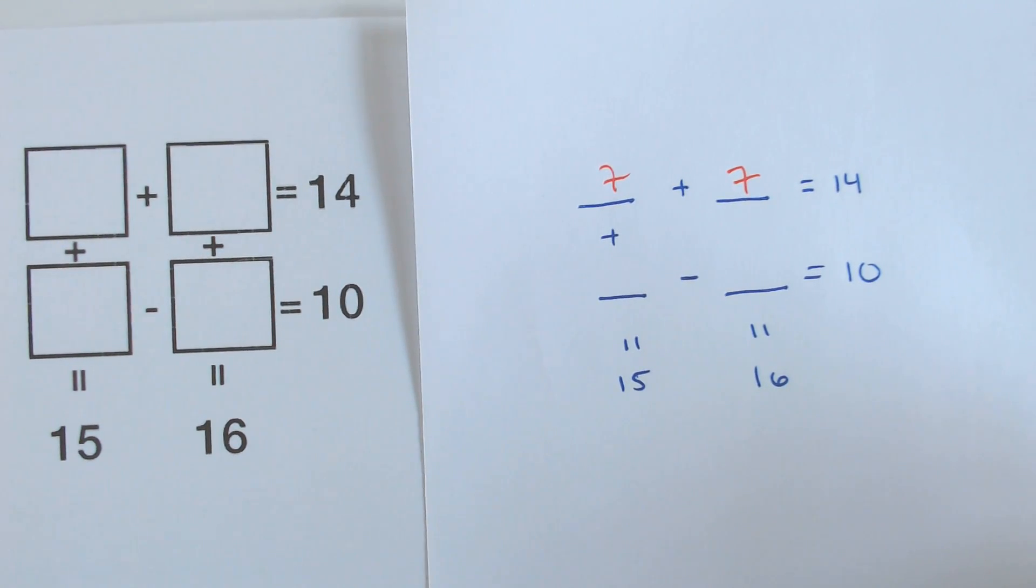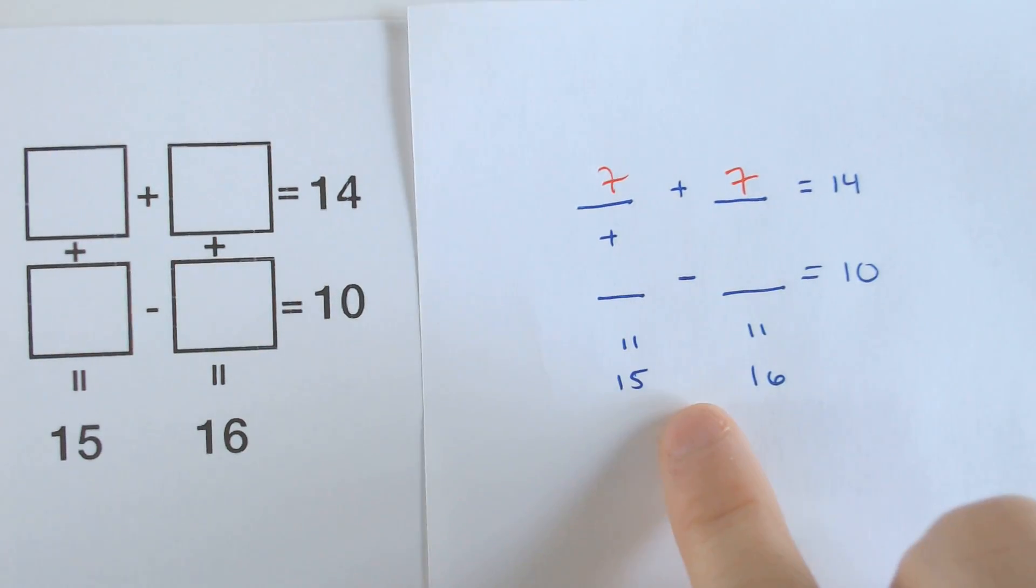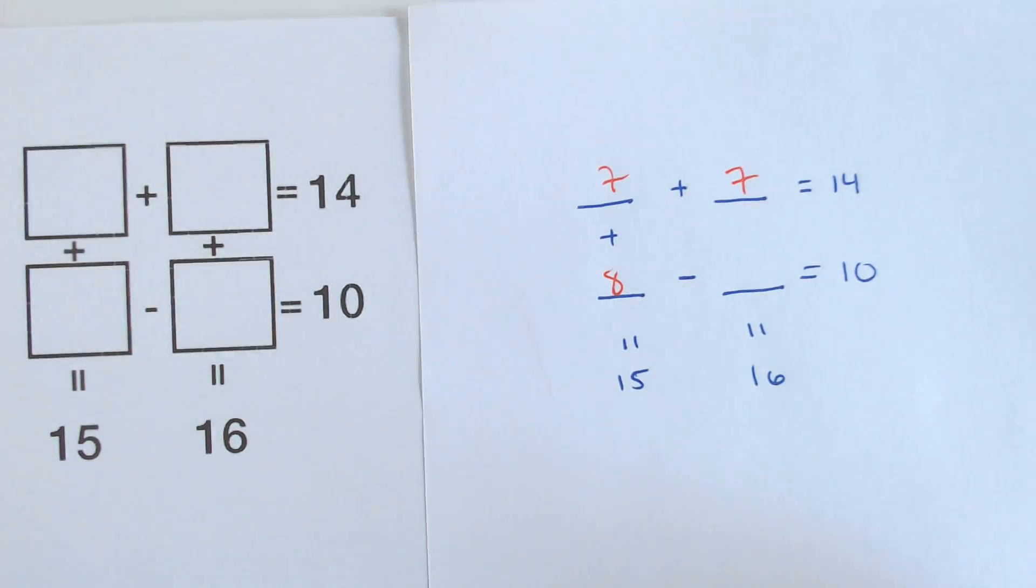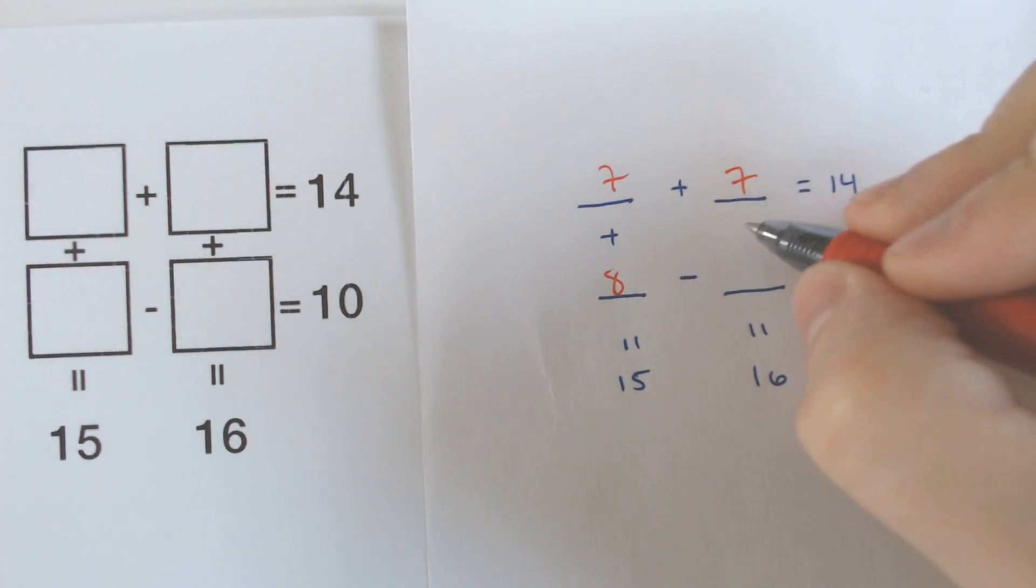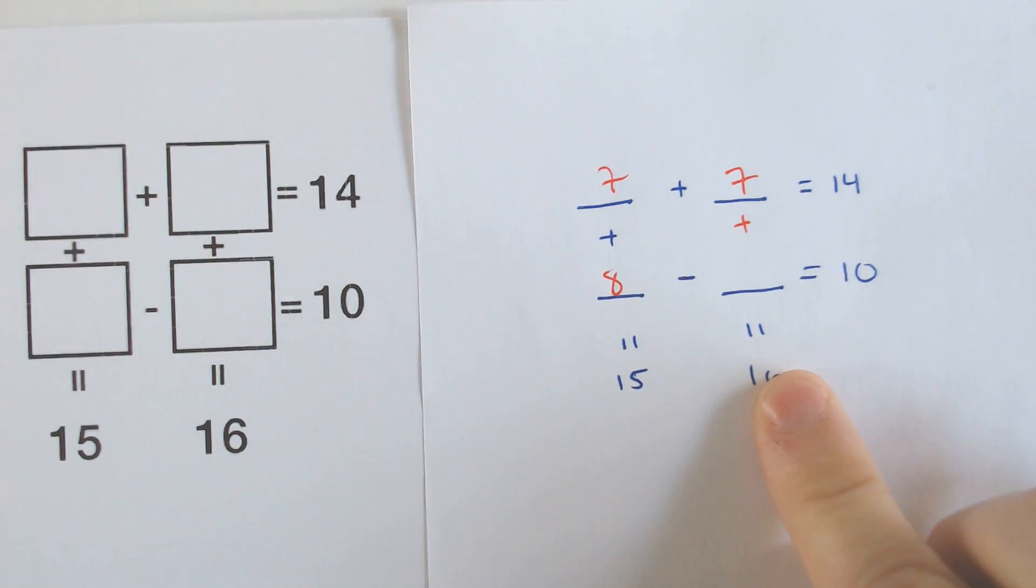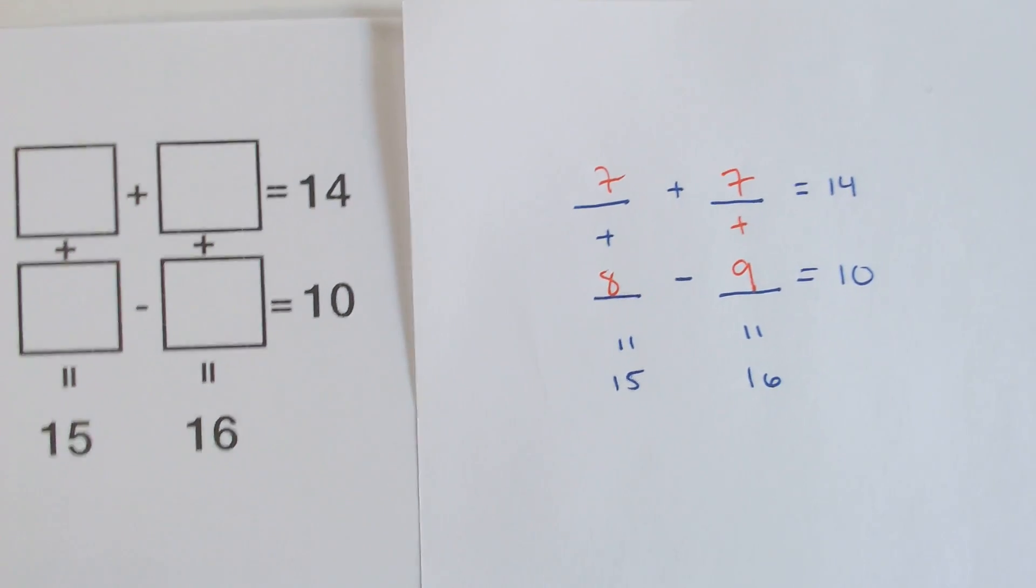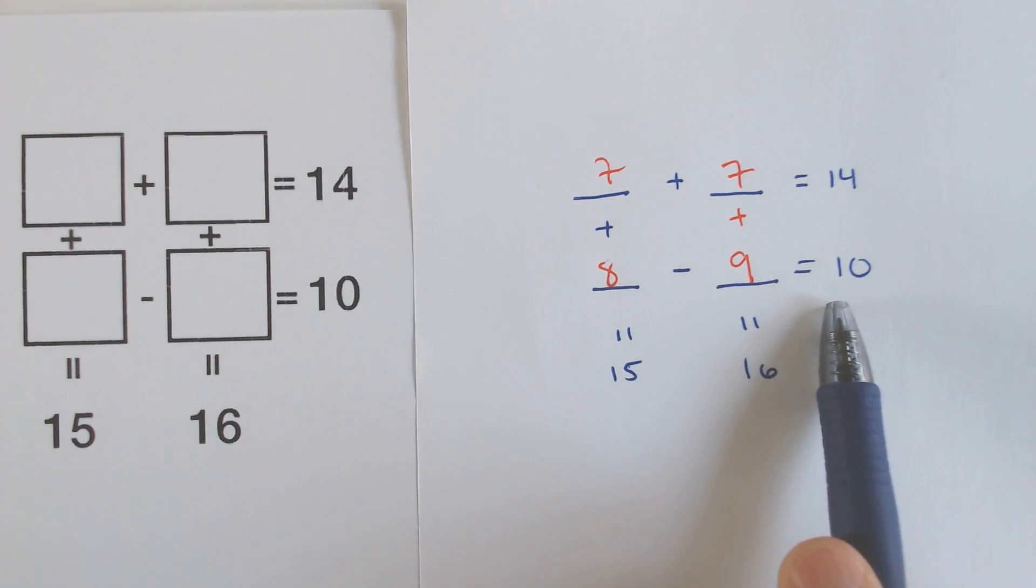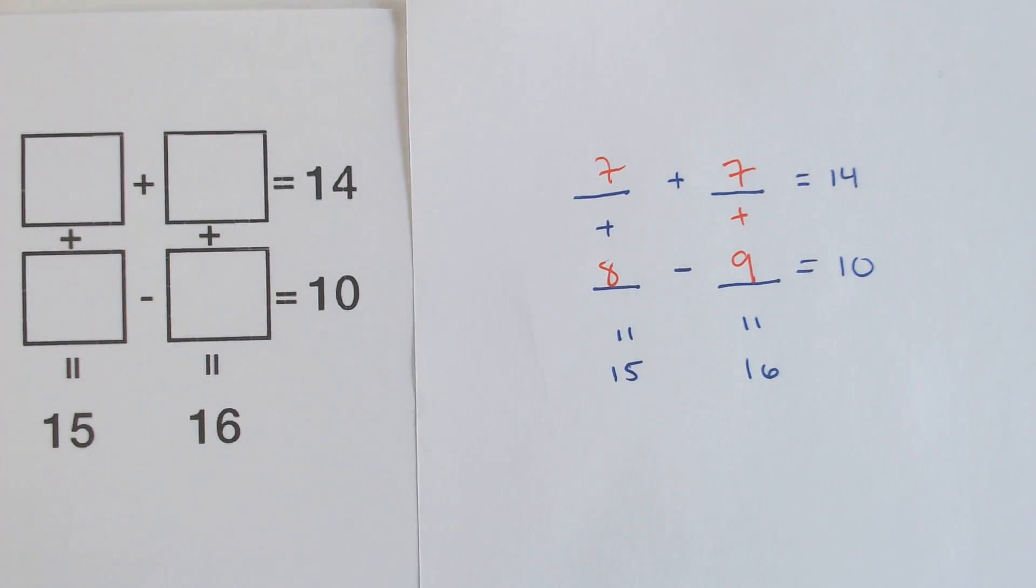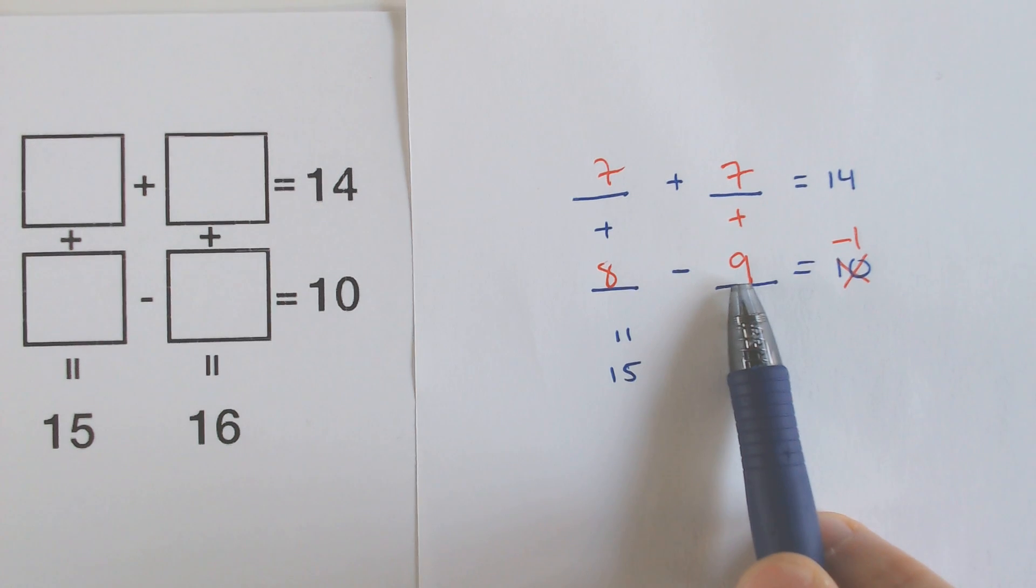And after I did seven plus seven, then I looked down because I would rather add than subtract in most cases. So seven plus what equals 15? That would be eight. And then seven plus what number would equal 16? And that would equal nine. And you realize very quickly that this is going to take a little while because eight minus nine does not equal 10. Eight minus nine equals negative one, which is wrong.